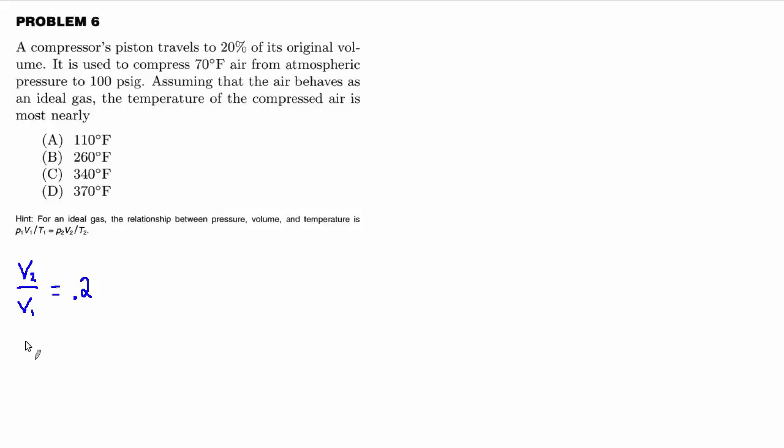We also know the temperature of the air starting out is 70 degrees Fahrenheit. So we'll say T1 is 70 degrees F. And we know that the pressure is initially atmospheric pressure, so P1 equals 14.7.